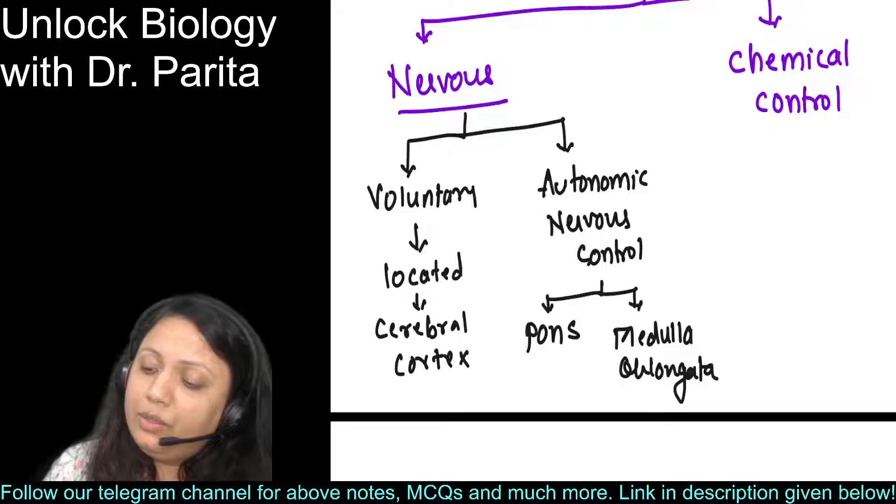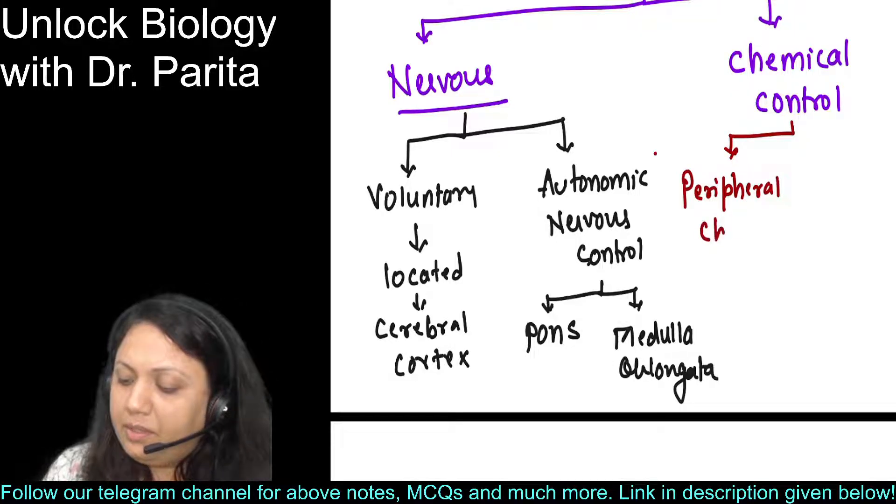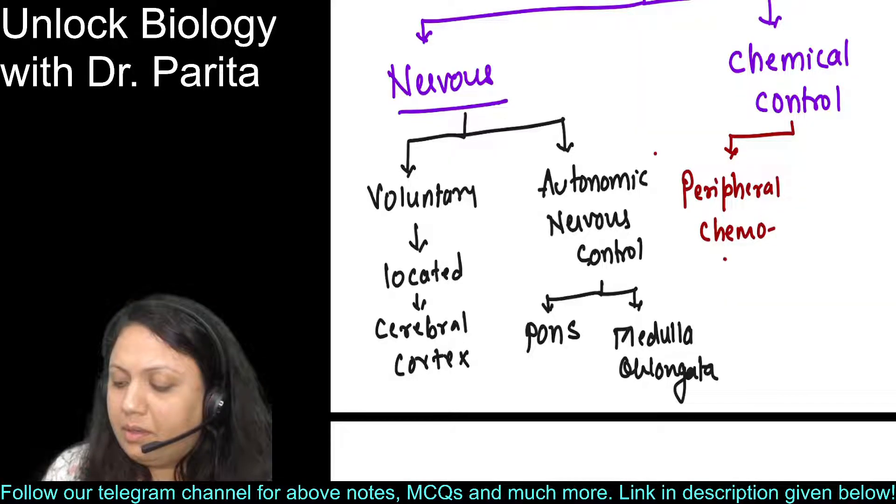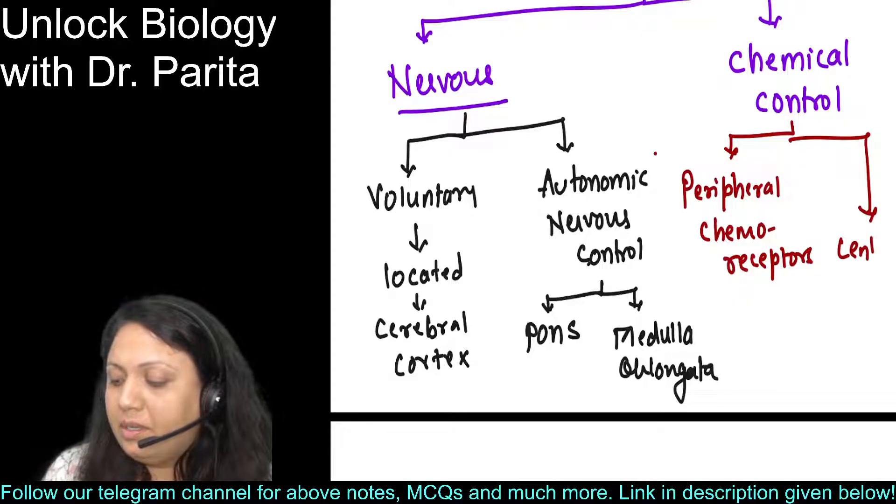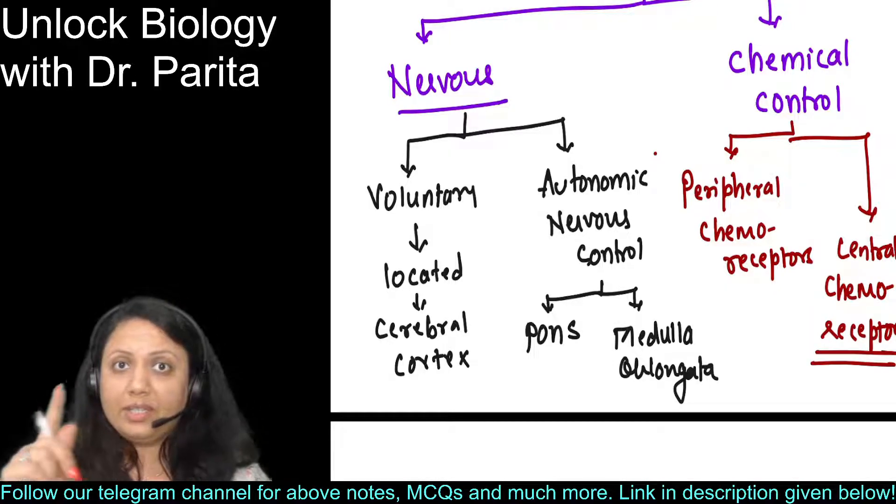Chemical control is divided into two: peripheral chemoreceptors and central chemoreceptors.